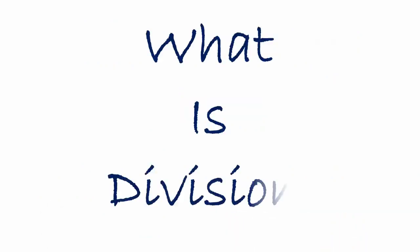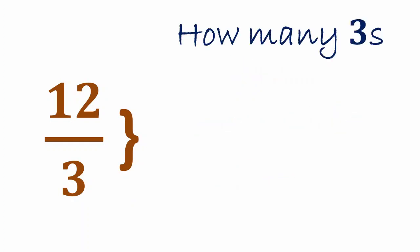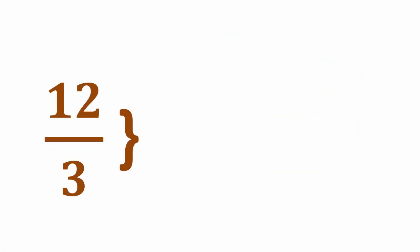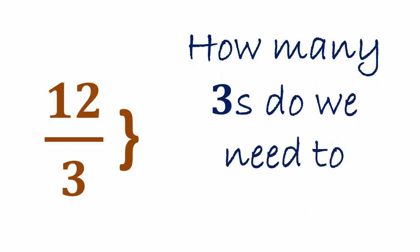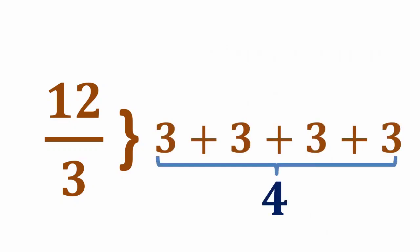The first thing we need to understand is what is division. Suppose we have a number 12 by 3. So what does this mean? It means how many 3's do we need to subtract from 12 to get to zero, or how many 3's do we need to make a 12. The answer is 4 3's can make a 12.